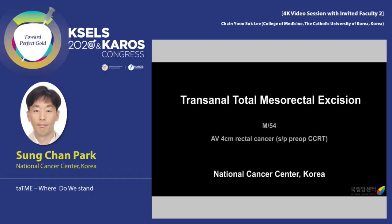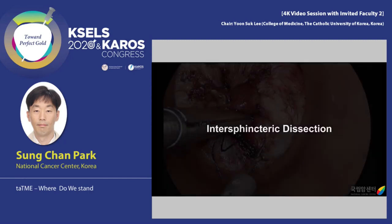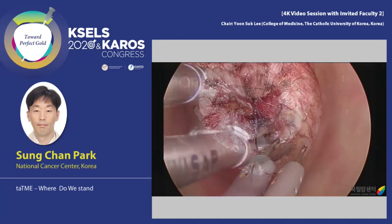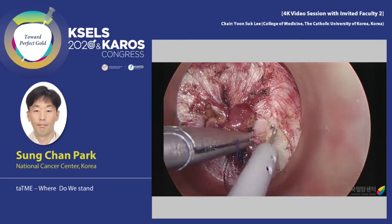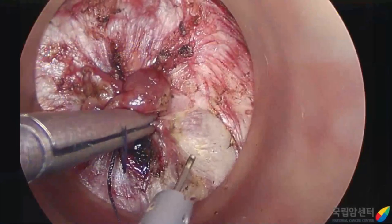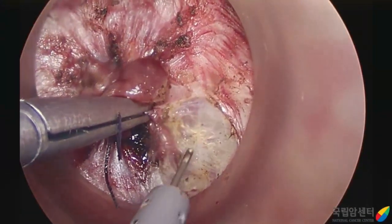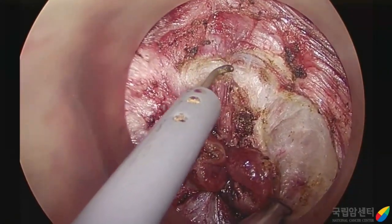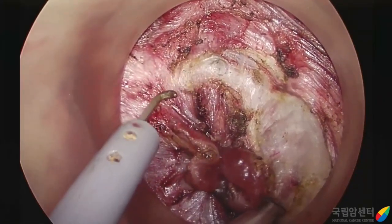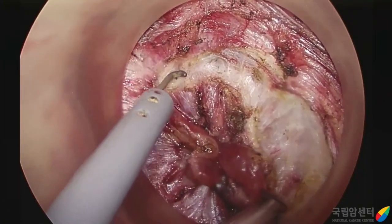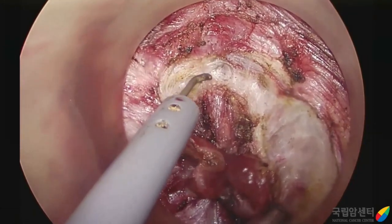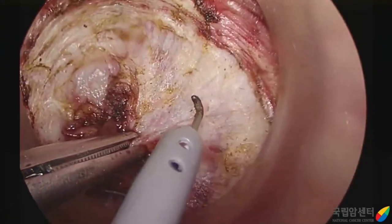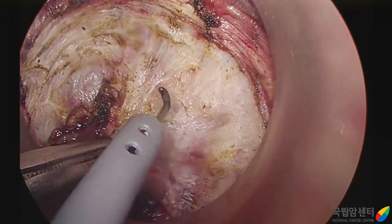This video is about transanal TME in the patient with rectal cancer after preoperative CRT. Because of low-lying tumor, we made a purstring suture before initiation of transanal dissection. Secure purstring suture is very important, and it must be durable and airtight to avoid contamination and tumor cell spillage during the procedure.